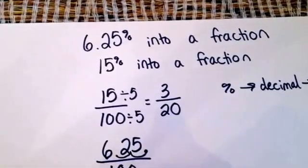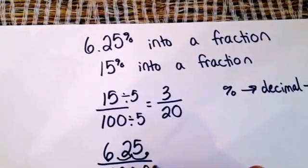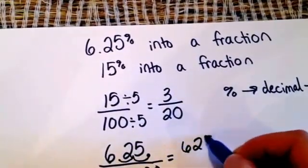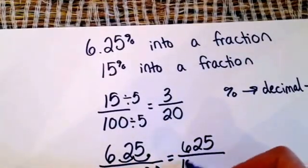But whatever I do to the top, I have to do to the bottom. So I'm going to also move this over two places. So now I have 625 over 10,000.